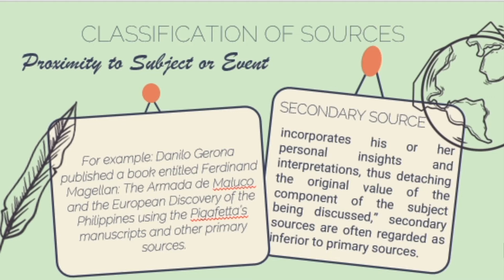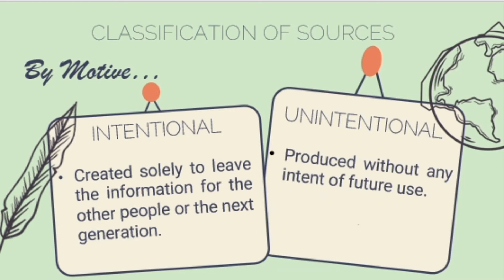Some sources also provide both primary and secondary segments, like newspapers or broadcasting. Newspapers usually narrate events from a witness's perspective and also provide interpretations and reflections from the writers. The eyewitness is considered the primary source, while the reporter's interpretation of what the witness said constitutes the secondary element. The second classification of sources is according to motive.